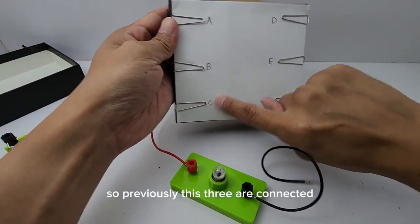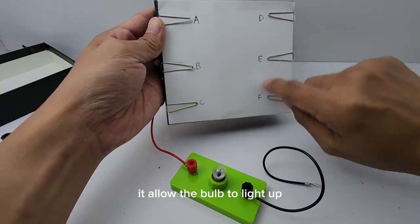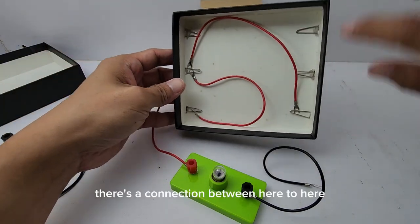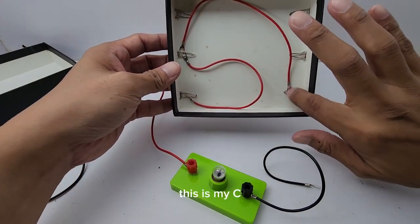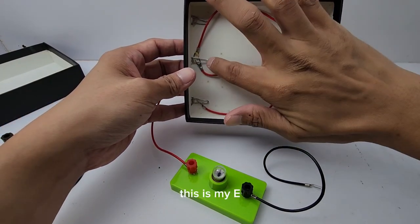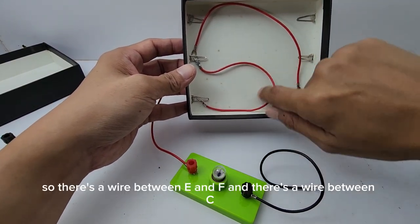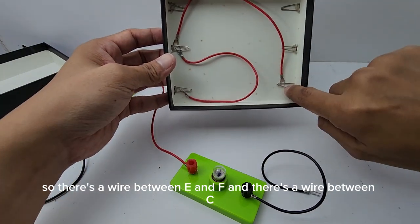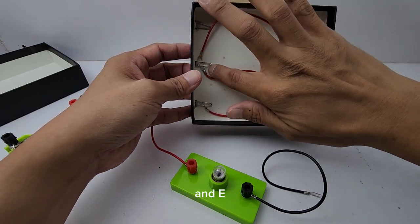Previously, these three are connected. It allows the bulb to light up. This is how the wire looks like. There's a connection between here to here. This is my C. This is my E. And this is my F. There's a wire between E and F. And there's a wire between C and E.